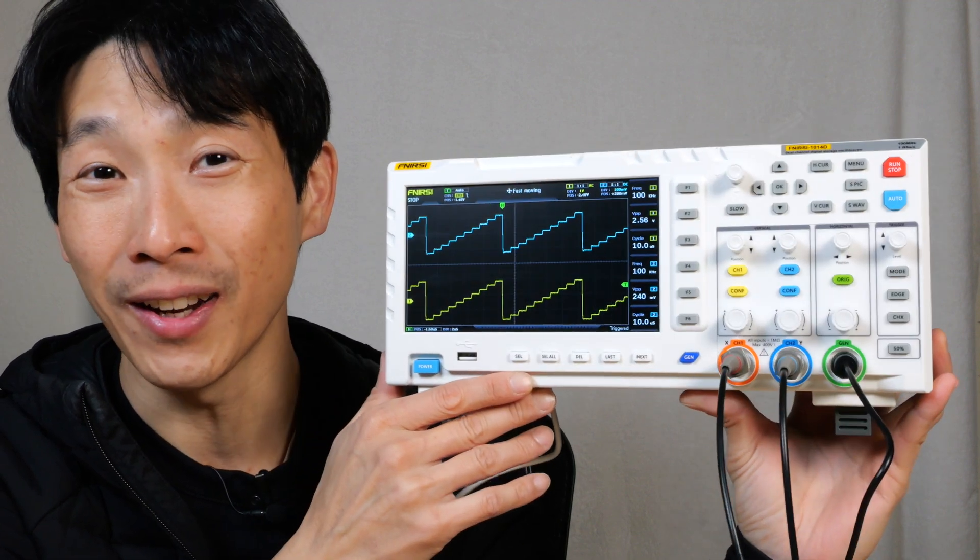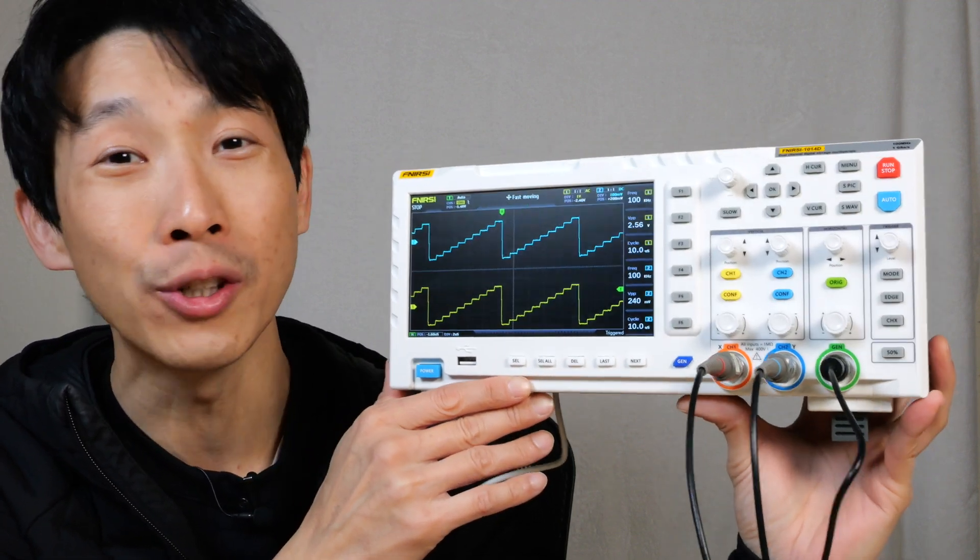How's it going everybody? This is B2Bush. This is the FNI-RSI 2-channel 100MHz oscilloscope.